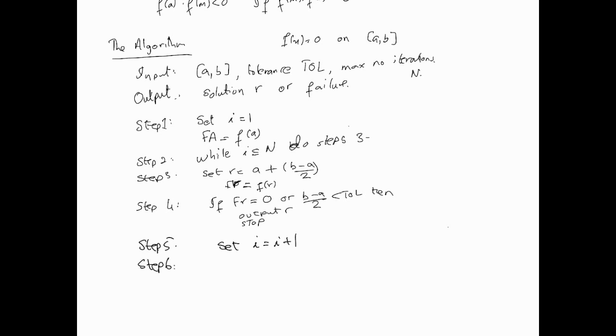Step six, we need to update. And this is the test to see, if FA multiplied by FR is greater than zero, then set a equals r, so FA equals FR, else, if the above is not true, else set b equal to r, so one of the two.